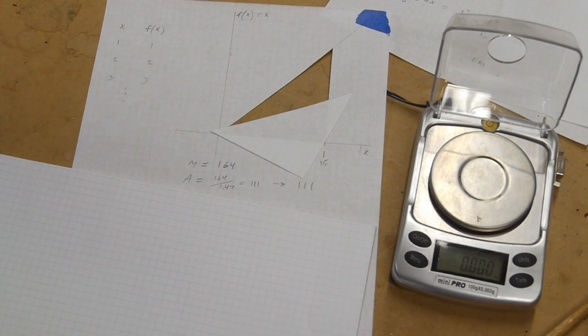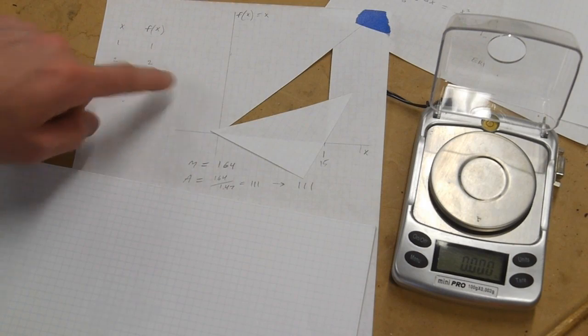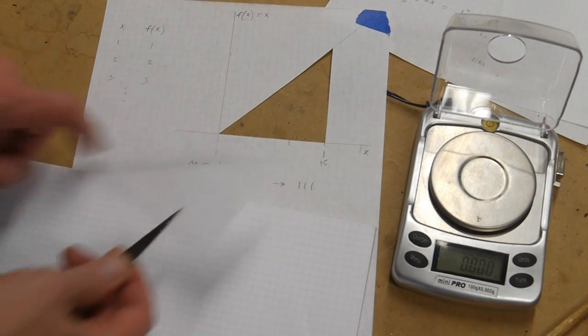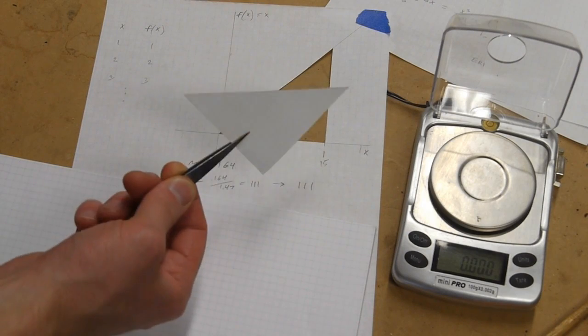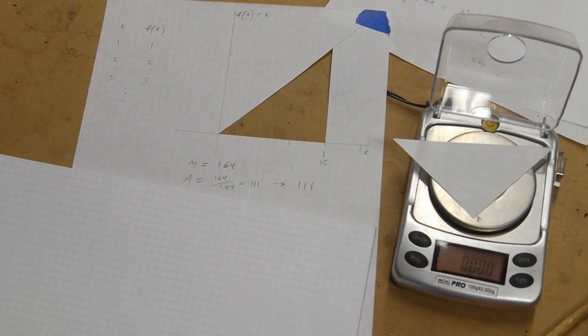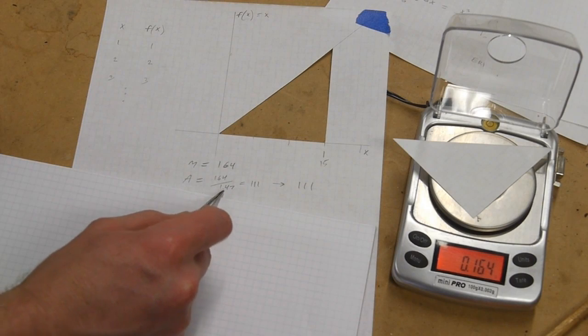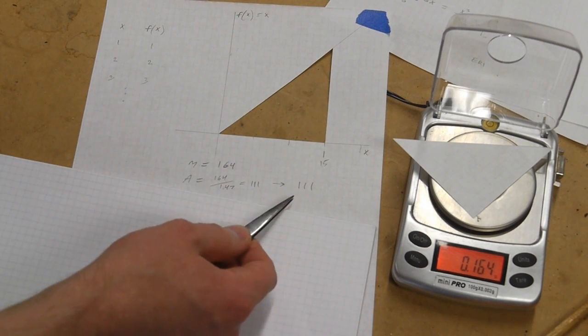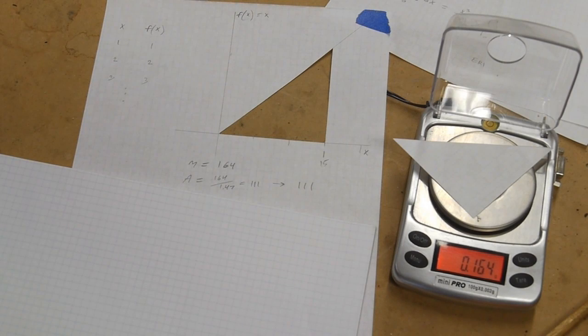Okay, so let's start with an easy one. This is f of x equals x. And so what I did was I just drew it out with a pencil and then cut out the actual piece that we want to integrate. And we can check the mass of that, and then divide by that 1.47 constant, and we get the area in terms of squares is equal to 111.